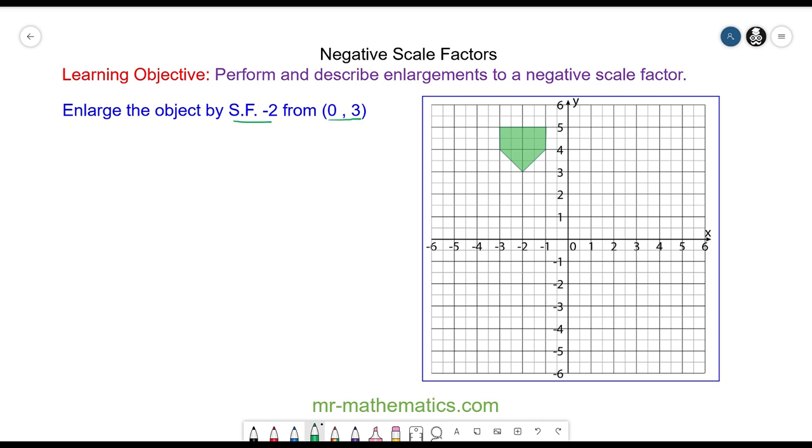Okay so the centre is 0, 3. I'm going to label this vertex A, this vertex B, and this vertex C.